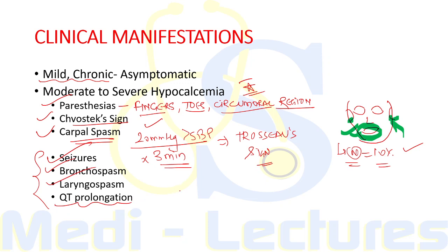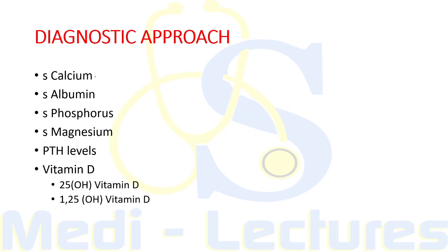On ECG, QT shortening is seen with hypercalcemia, whereas QT prolongation is seen with hypocalcemia.